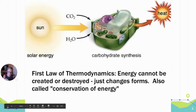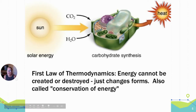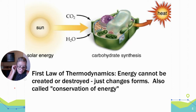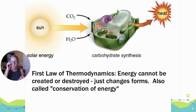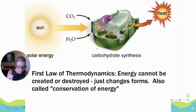Laws of thermodynamics: the study of energy transformations that occur in matter. The first law — also called the law of conservation of energy — states that energy cannot be created or destroyed, but it can be transferred and transformed. So solar energy is converted to the potential energy of carbohydrates in the chloroplast. That's an example of energy being transferred and transformed.